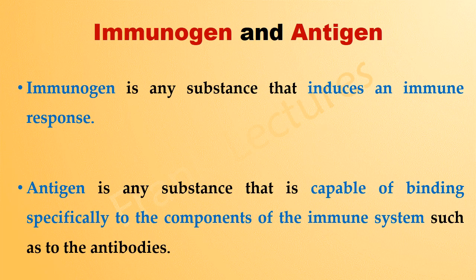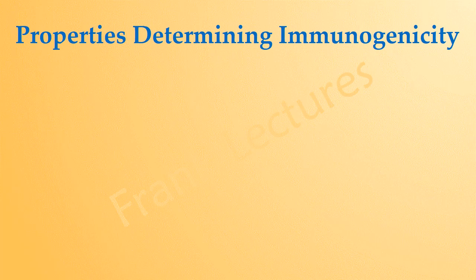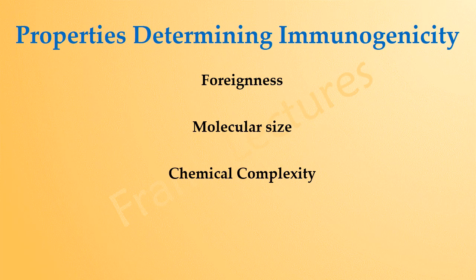Let us now study the properties of a substance which determine its immunogenicity. Immunogenicity of a substance is determined by the following four main properties: foreignness, molecular size, chemical complexity, and stability or degradability.